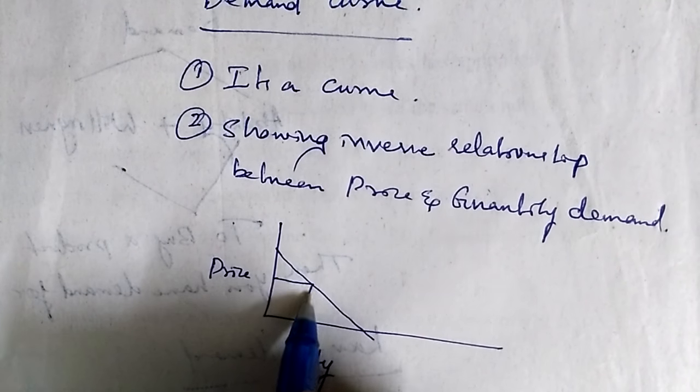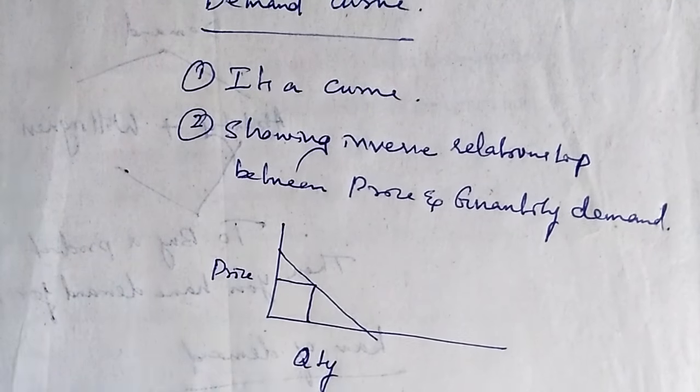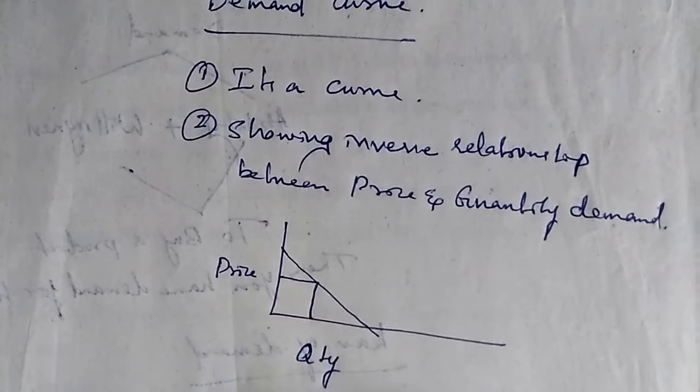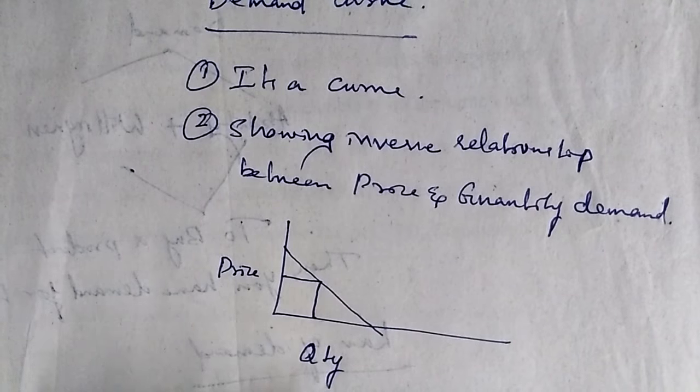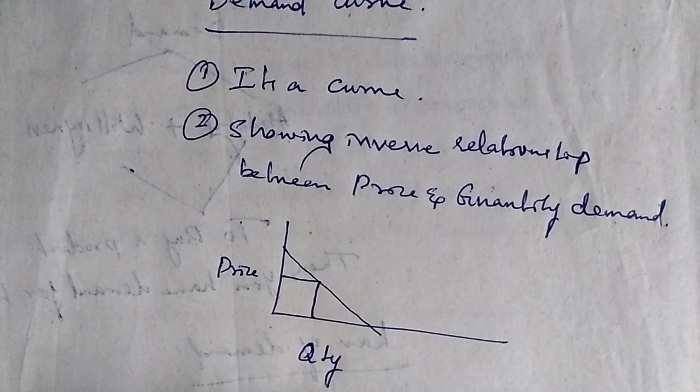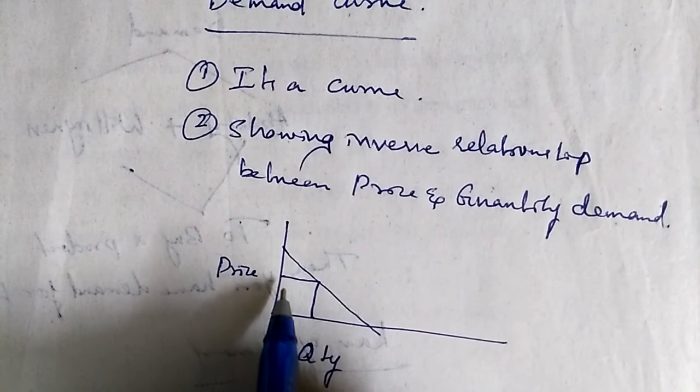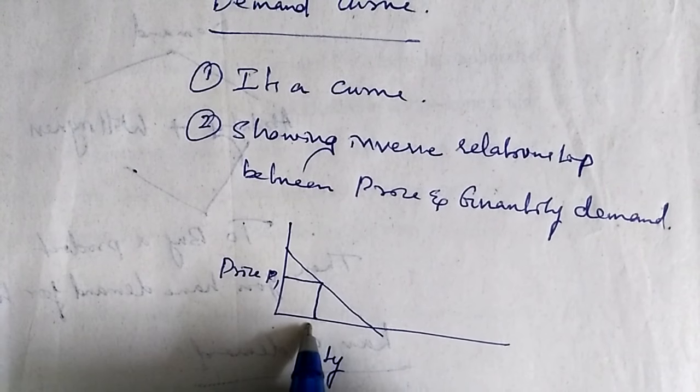That means we have already discussed the law of demand—the inverse relationship between price and quantity. When price decreases, quantity demanded increases. When price increases, quantity demanded decreases. So if suppose my price is P1 and my quantity is Q1, and suddenly when the price is decreased from P1 to P2, my quantity demanded should increase.